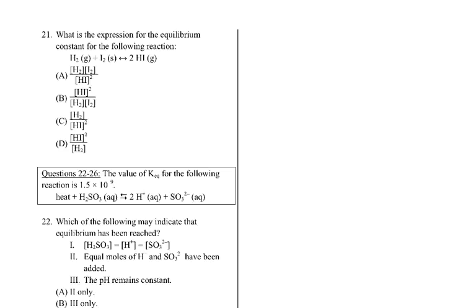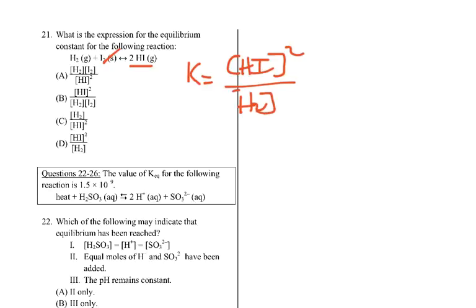Moving into equilibrium — question 21: what is the expression for the equilibrium constant? It's products over reactants raised to the power of their coefficients, but we do not include solids. So K = [HI]² / [H₂]. We exclude the solid I₂. Looking for HI squared over H₂ — that's answer D.